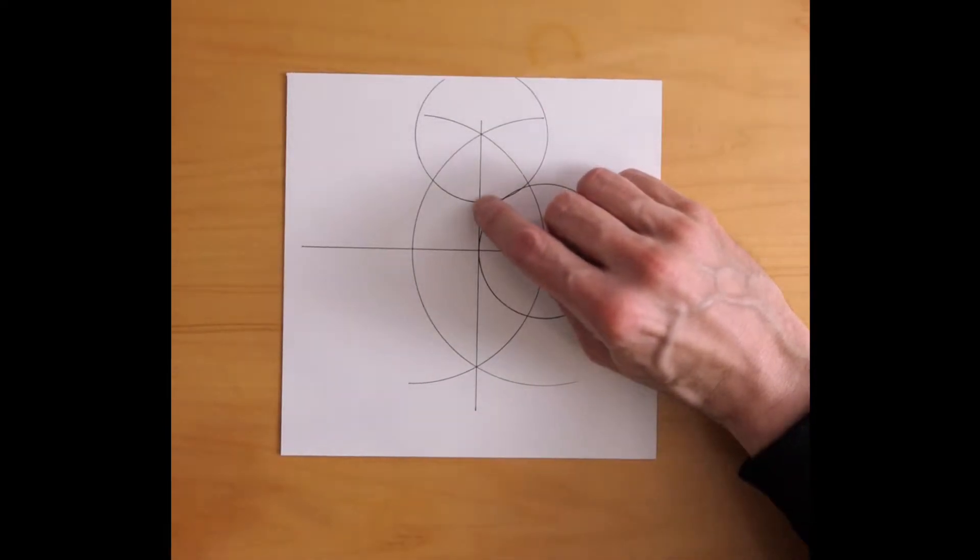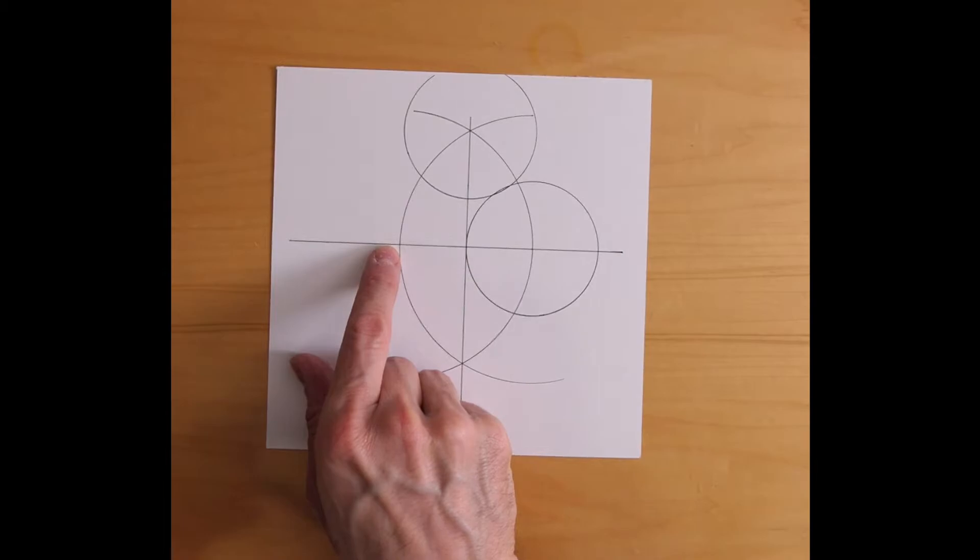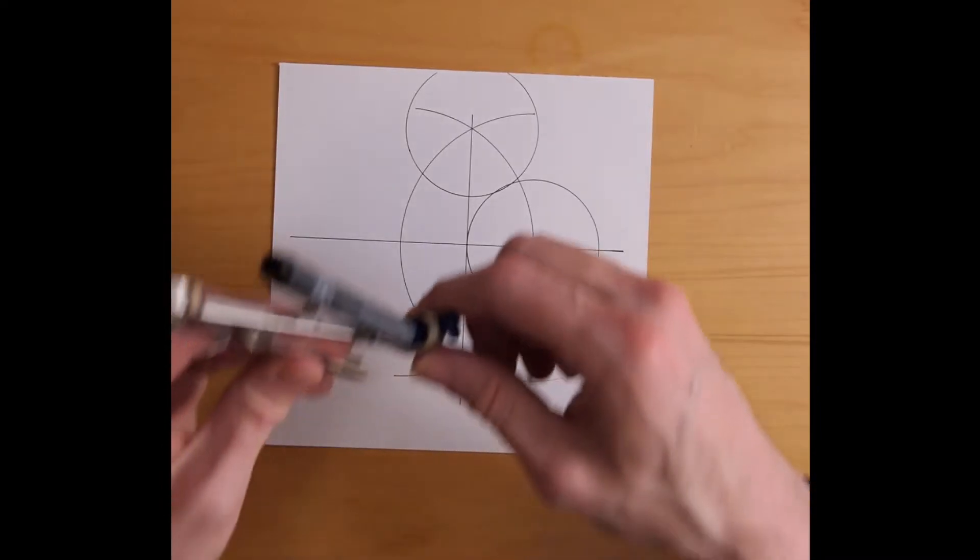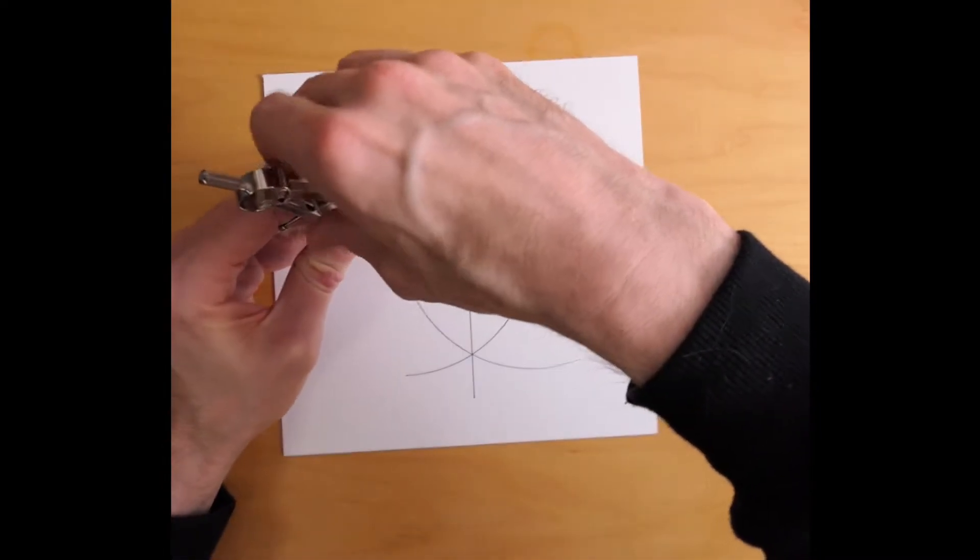This point right here is going to be the top of the pentagon. This is going to be one upper corner and this is going to be the other upper corner. And the lower corners are going to be down here somewhere. And I can find them by working from the other sides whose lengths I now know.